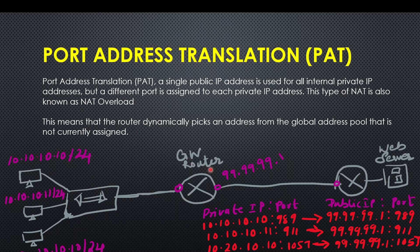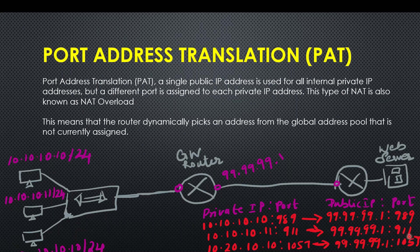We will do the same as dynamic NAT. We will configure the global address pool, then configure the IP with a port number and translate it. This is a private IP — we have three systems. We will use three public IPs, then one public IP. The source port and destination port are mapped — this is the host port. We will map the port.